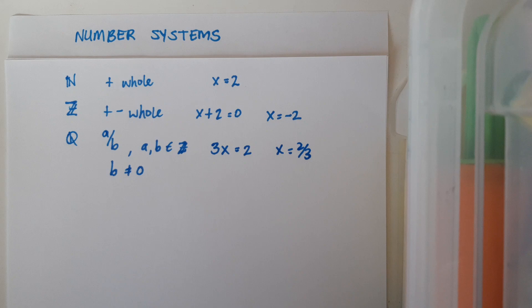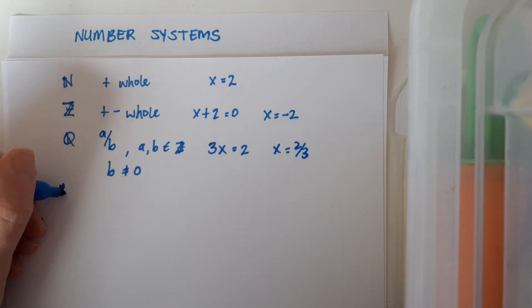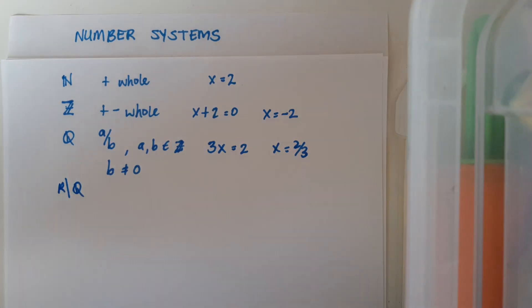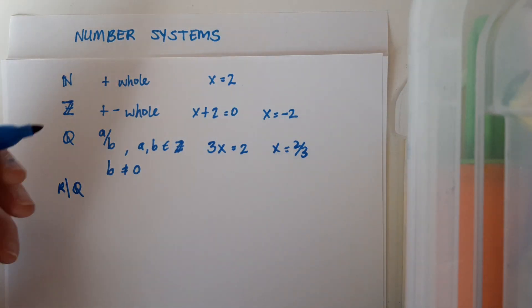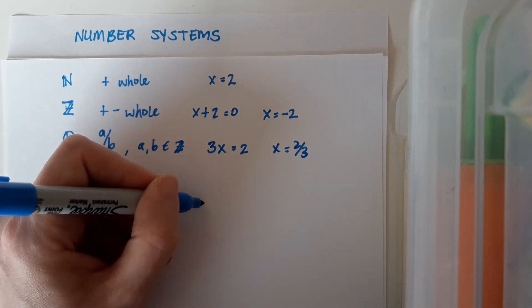But that doesn't still cover everything because we also have numbers that go beyond that. So we have surds and we have non-terminating, non-recurring decimals that can't be written in fraction form. So we want to expand to cover those. And that then will be the set of irrational numbers, the extra numbers that we need. They're basically numbers that are not rational numbers.